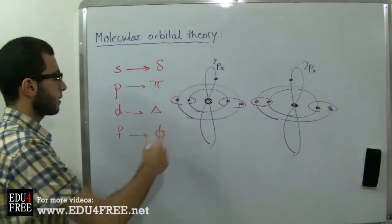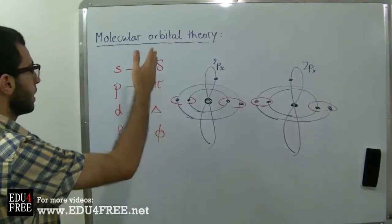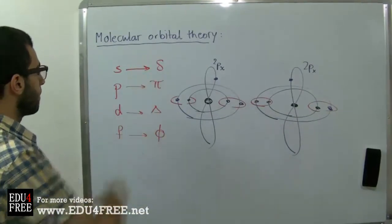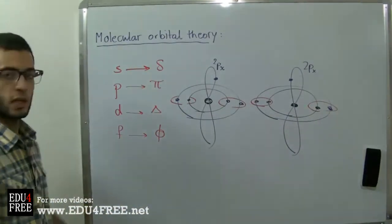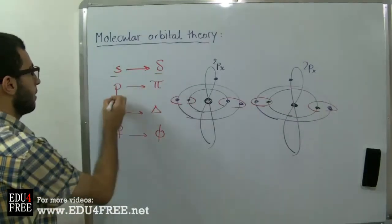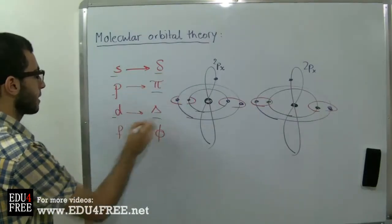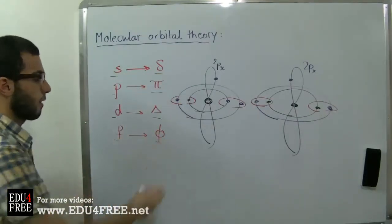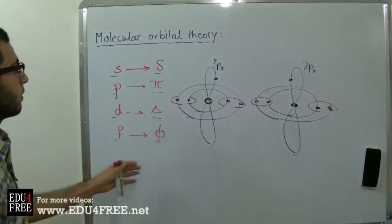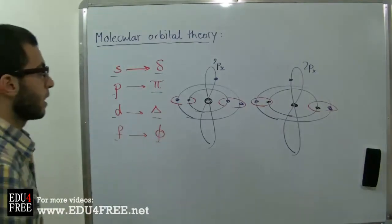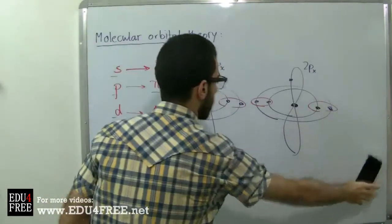Each name uses Greek letters that begin with the same syllable as the sub-level: s-sigma, p-pi, d-delta, f-phi. Now we will have an example to make this a little bit more clear.